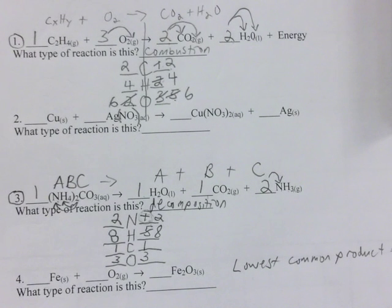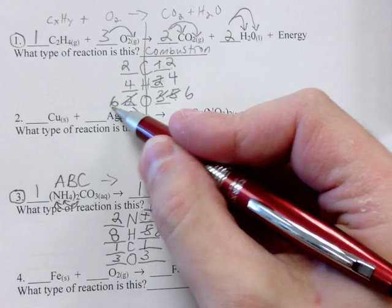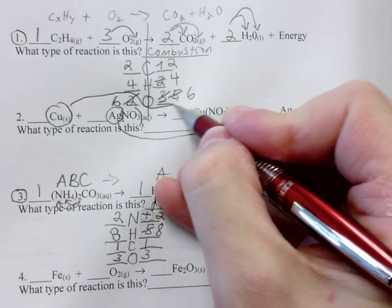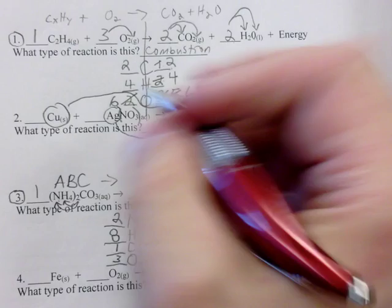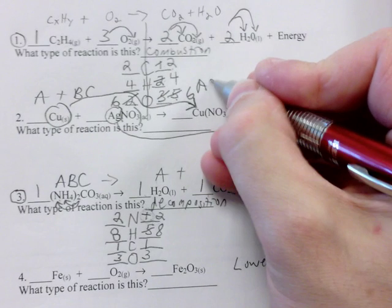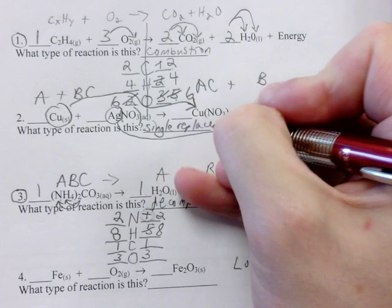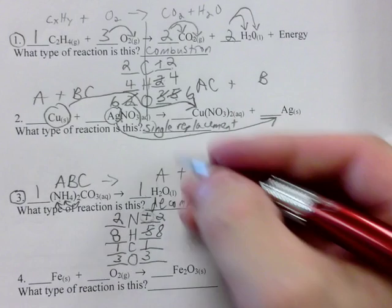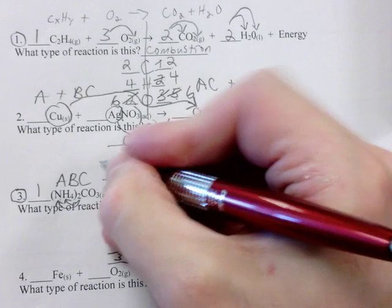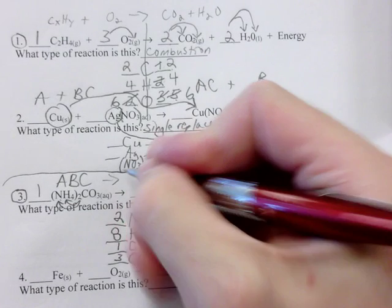I'm going to do one, two, and three with you, and you can do four, five, and six on your own. For number two, what type of reaction is this? We have Ag getting kicked off on its own and Cu swooping in to take its place. The general formula is A + BC → AC + B, so this is a single replacement reaction. I'll use the shortcut method — if it freaks you out, you don't have to.